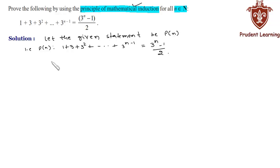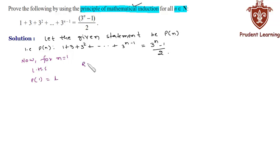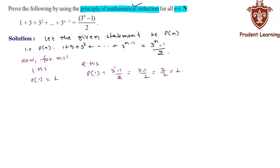Now we'll check whether the given equation holds true for n = 1. For n = 1, on the left hand side we have P(1) = 1. On the right hand side, substituting n = 1, we get (3¹ − 1) / 2 = (3 − 1) / 2 = 2/2 = 1. So P(1) = 1 on both sides, and therefore P(1) is true.